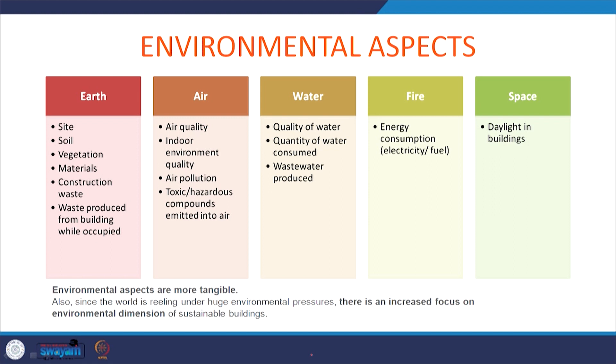Next we have air — here we discuss about air quality, the indoor environment quality in buildings, air pollution, and the toxic compounds which are emitted into the air. All of that comes under the domain of air within the environmental aspect. The next and one of the most important ones is water, where we have quality as well as quantity of water discussed, and the wastewater which is produced and treated.